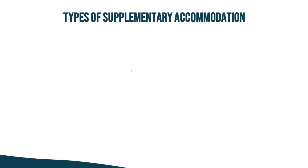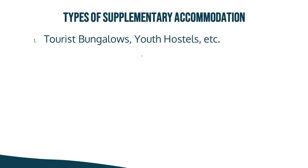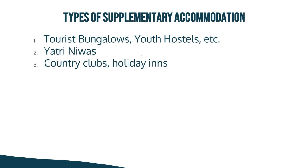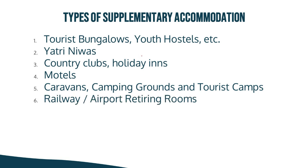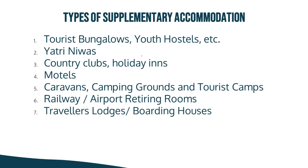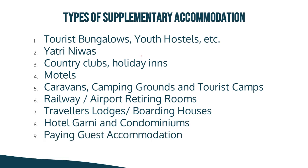So what are the types of supplementary accommodation? We have tourist bungalows or youth hostels, yatri nivas, country clubs or holiday inns. We also have motels, caravans, camping grounds, and tourist camps. We also have railway and airport retiring rooms, travelers lodges or boarding houses, hotel garni and condominiums, paying guest accommodation, and tourist holiday villages. We will discuss these types one by one.